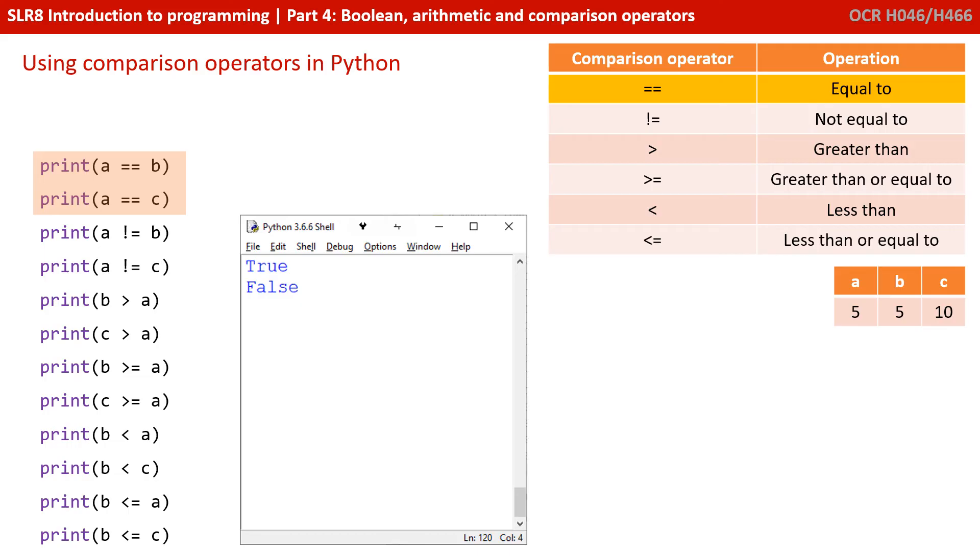We also have comparison operators. Let's have a quick run through those. For this to work, I've set three variables—a, b, and c. You can see that on the table on the right: a is 5, b is 5, and c is 10. So a equals b—that would be true because a and b are both 5. a equals c is false. Likewise, if I say a is not equal to b, that is false because a and b are equal. But if I say a is not equal to c, that is true because a is not equal to c—they hold different values.